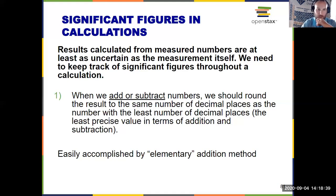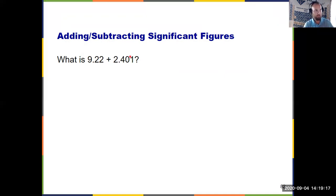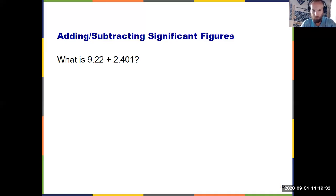For addition or subtraction, your final answer should have the same number of decimal places as whatever had the fewest decimal places to start. You can accomplish this easily using what I call the elementary addition method — putting everything on top of each other and drawing a line down after the number with the fewest decimal places. For example, if one number has two decimal places and another has three, report the final answer with two decimal places. The answer 11.62 comes out with four sig figs, and that's okay — you only worry about decimal places for addition and subtraction.